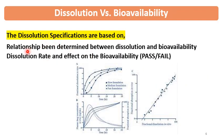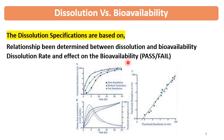Coming to dissolution specifications which are based on bioavailability — has a relationship been determined between dissolution and bioavailability? Is there clear understanding? The answer may be yes or no, and on the basis of that, dissolution specifications will be set. Then dissolution rate and its effect on bioavailability — whether a slow release, medium release, or fast release formulation is passing, and what is the relationship between dissolution rate and bioavailability. Here I have shown the example of slow, medium, and fast release and its effect on plasma concentration.